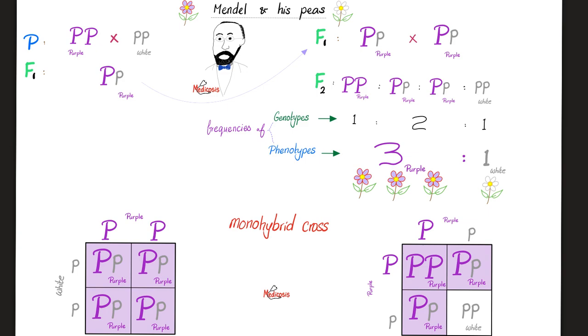Three purple, to one white. 75% purple, to one white. 75% dominant color, the purple, to one recessive color. So, in the first generation, we had 100% purple. With the second generation of monohybrid crosses, you get 75% to 25%, purple to white. Dominant to recessive.